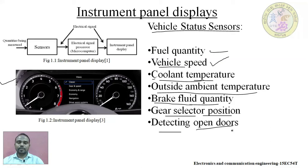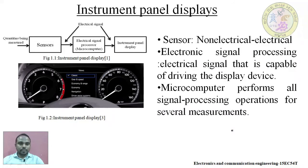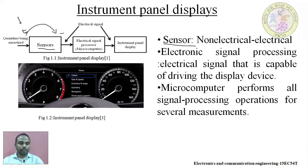These are all the basic status sensors used in the vehicle. Now we will have a detailed discussion about the instrument panel block diagram. A sensor is a device which converts the quantity to be measured into an electrical signal — whether the input is electrical or not, it will be converted to electrical form. If the signal is already in electrical form, we can directly send it to the electrical signal processor or microcomputer.